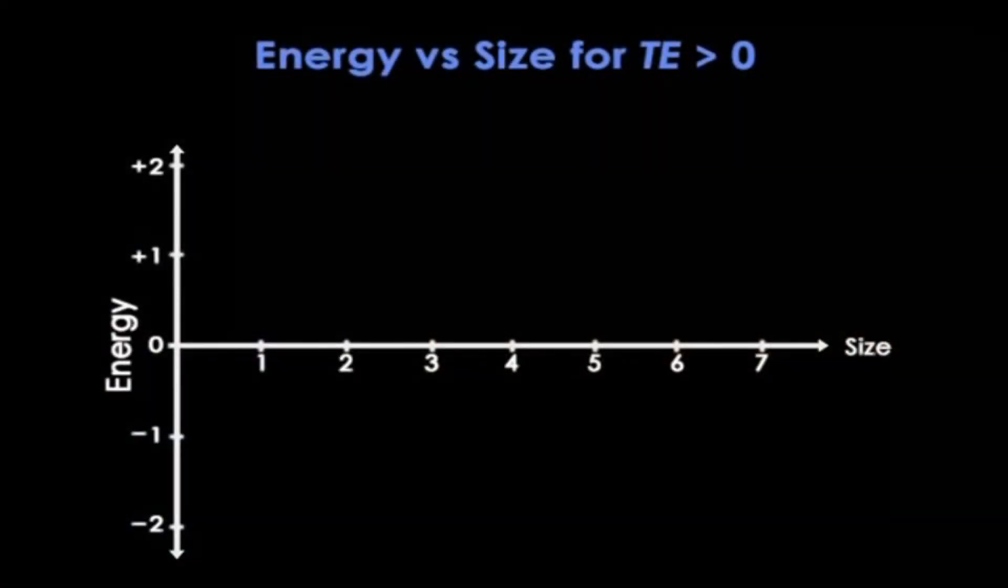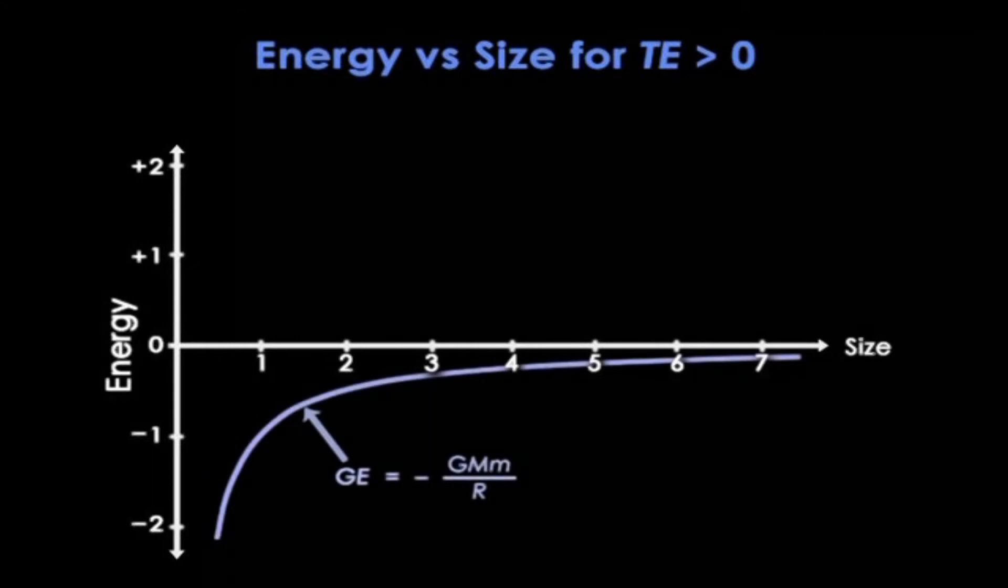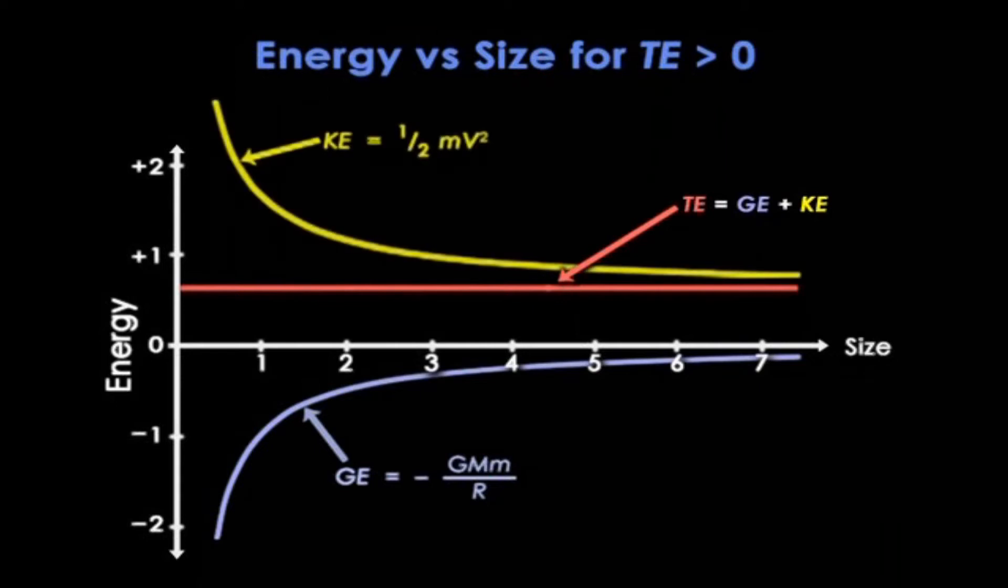OK, now let's look at a universe that has positive total energy, so it will expand forever. Here's the gravitational energy in blue, just as before, but now the total energy is up here in red. So the kinetic energy must be this yellow line. It's exactly the same shape as the previous case, but shifted up.